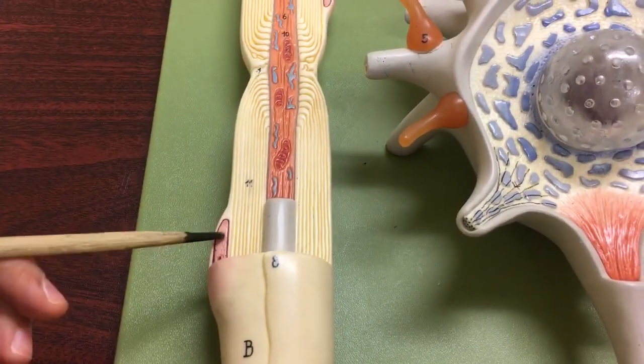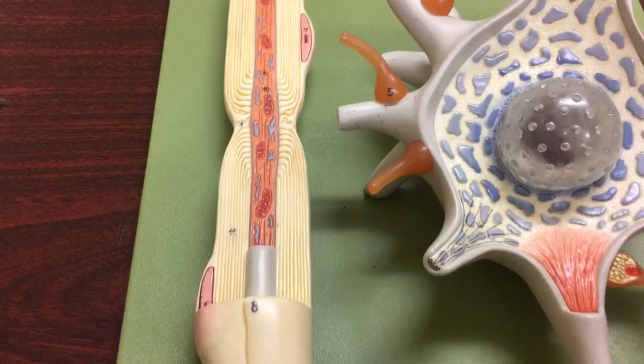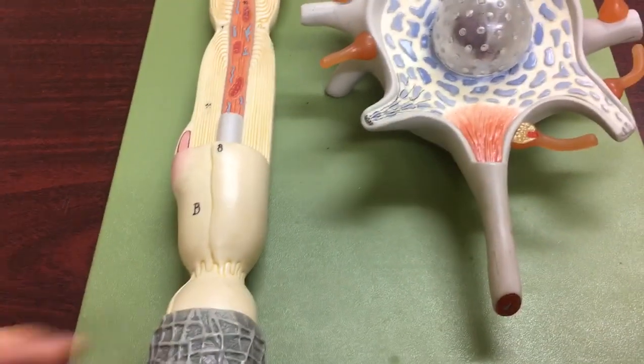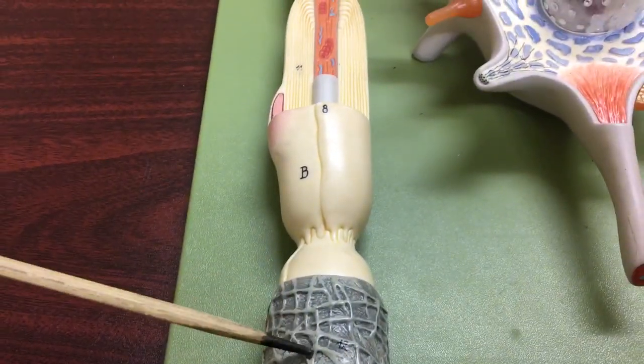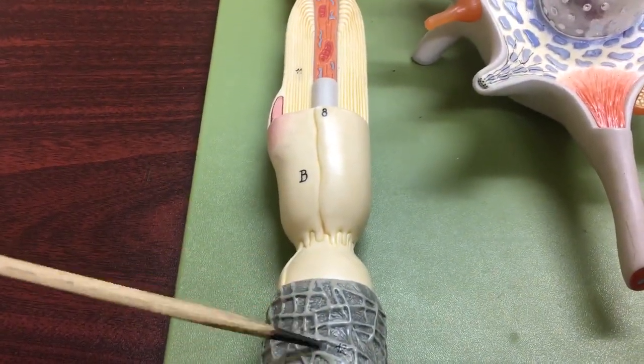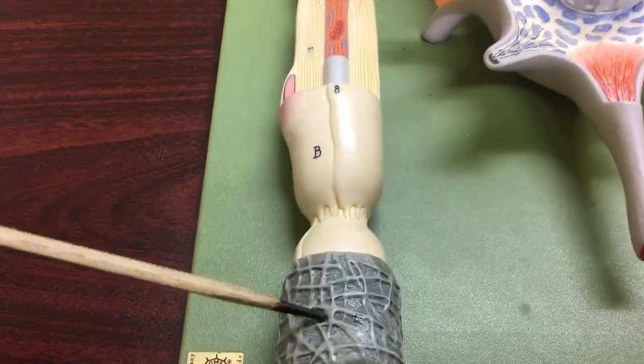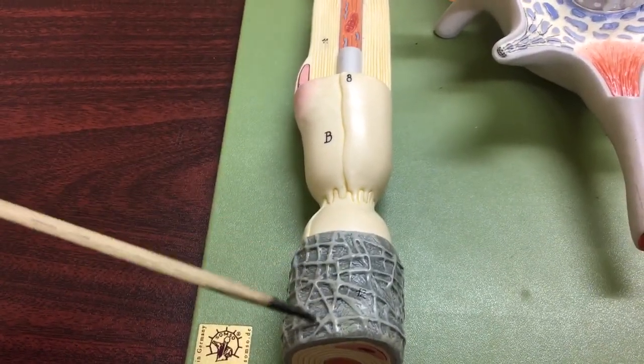Here you can see the nucleus of the Schwann cell. This is connective tissue that's basically surrounding the axon of the neuron. This is called the endoneurium.